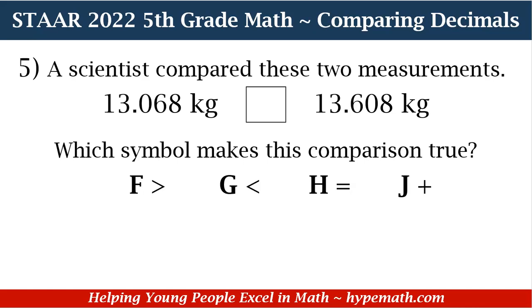Number 5 says: a scientist compared these two measurements — 13 and 68 thousandths, and also 13 and 608 thousandths, in kilograms. Which symbol makes this comparison true? Is it F, greater than; G, less than; H, equal to; or J, plus?